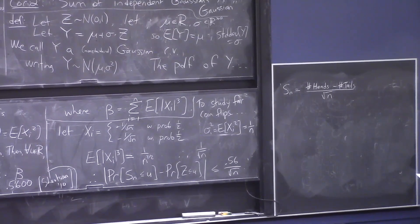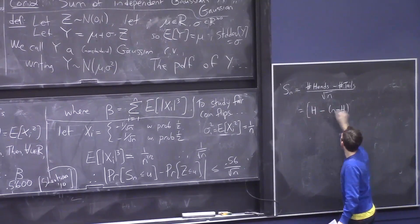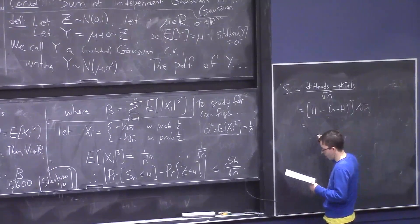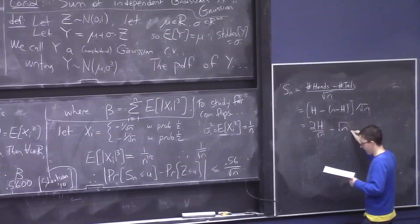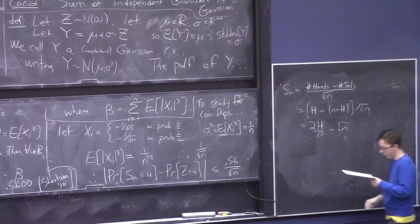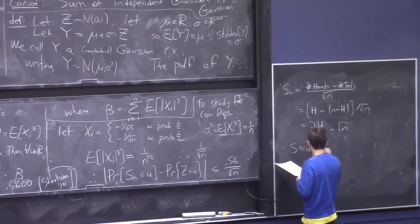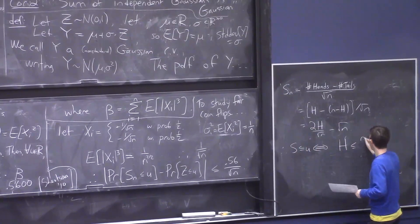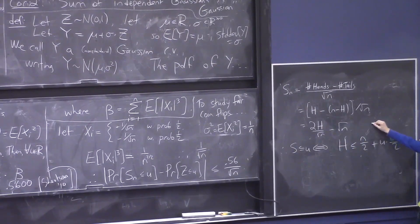And that's, like, heads minus tails is n minus 2 heads over root n. Okay, so it's 2 heads over root n minus root n. Okay, and therefore, S is less than or equal to u is equivalent to heads being less than or equal to n over 2 plus u times square root n over 2. So, I just invert this relationship between S and H. And notice, this is, like, the mean number of heads. And this is the standard deviation number of heads, so it sort of all makes sense.